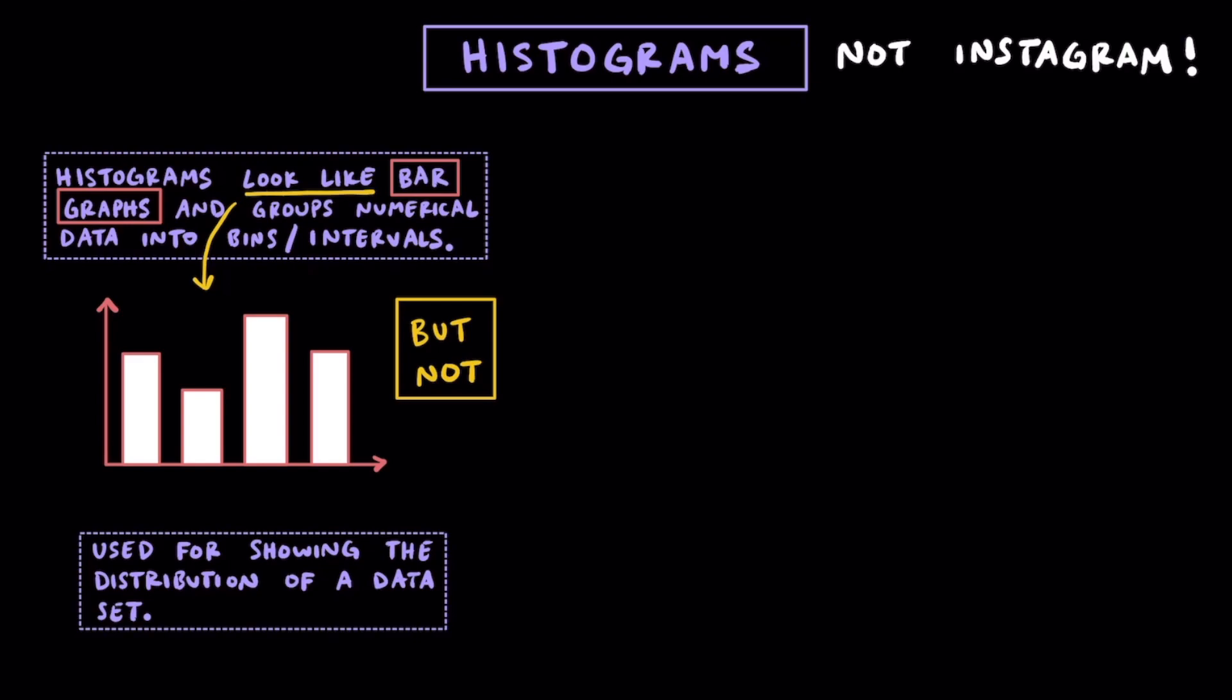It's important to know that we use histograms for showing the shape or distribution of a data set. And to refresh your memory on the three distributions that we've looked at in the past, we have symmetrical, left-skewed, and right-skewed.